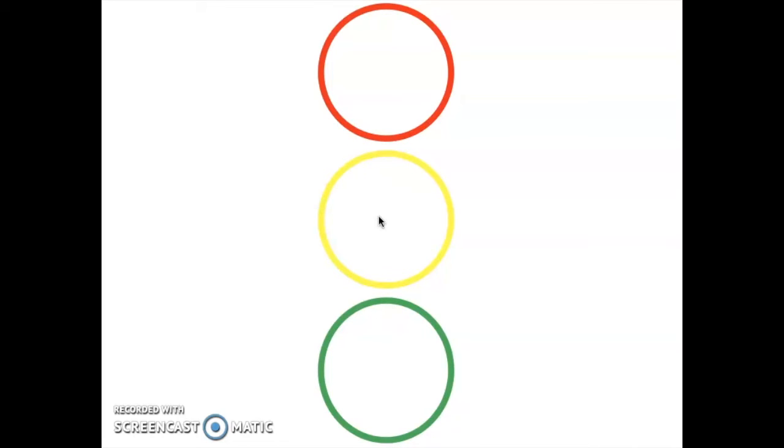They would jump in the hula hoop to say the second sound, and then they would jump in this one and say the third sound. So they're physically moving their bodies to practice segmenting the word. So I'll give you an example.